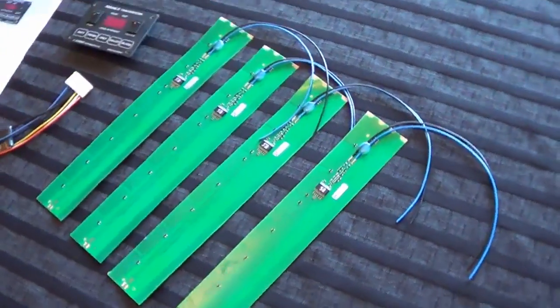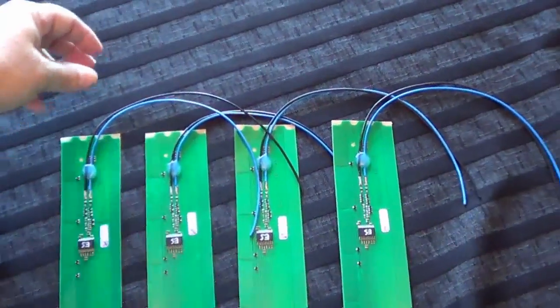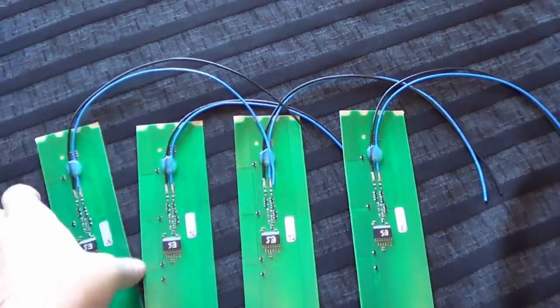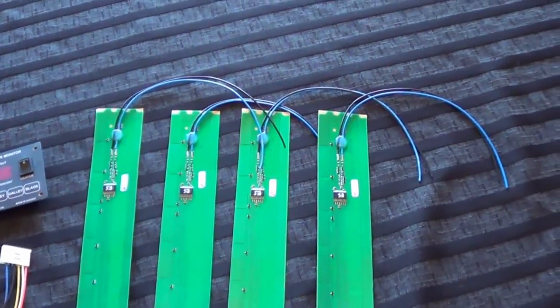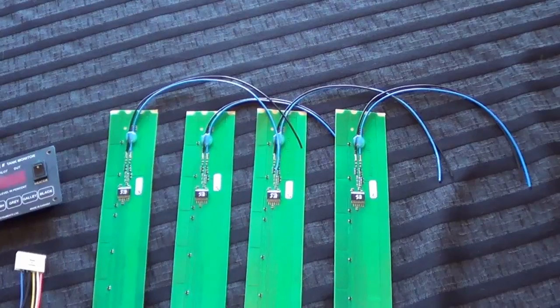You can see off the top there's only two wires and they actually are all going to join together so you only need two conductors going back to the main control panel which is really good.